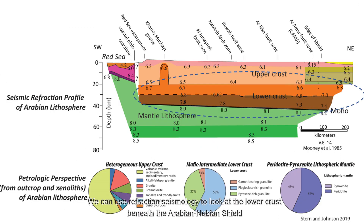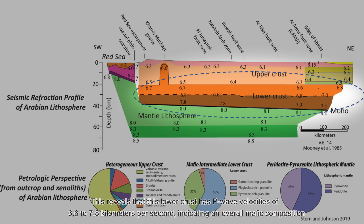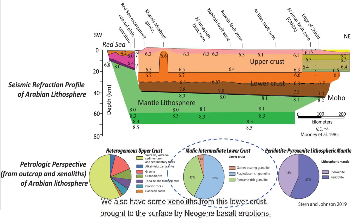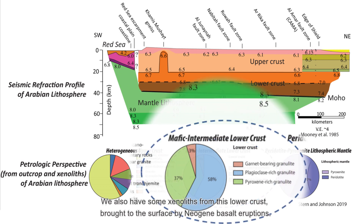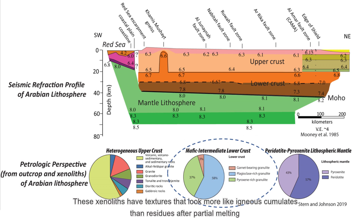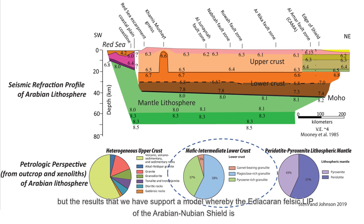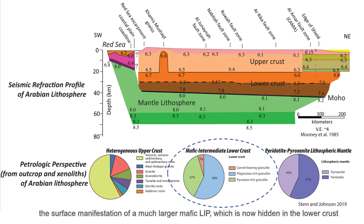We can use refraction seismology to look at the lower crust beneath the Arabian Nubian Shield. This reveals that the lower crust has P-wave velocities of 6.6 to 7.8 kilometers per second, indicating an overall mafic composition. We also have some xenoliths from this lower crust, brought to the surface by Neogene basalt eruptions, indicating that the mafic lower crust of Arabia is rich in plagioclase and pyroxene. These xenoliths have textures that look more like igneous cumulates than residues after partial melting, supporting a model whereby the Ediacaran felsic LIP of the Arabian Nubian Shield is the surface manifestation of a much larger mafic LIP, now hidden in the lower crust.